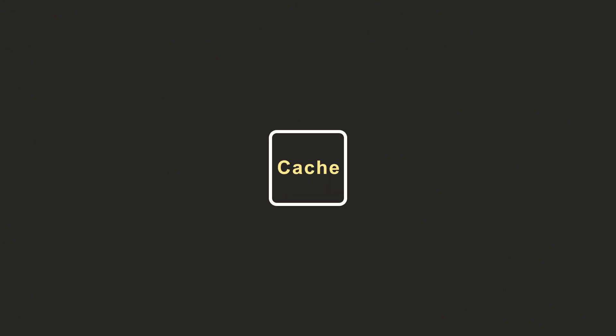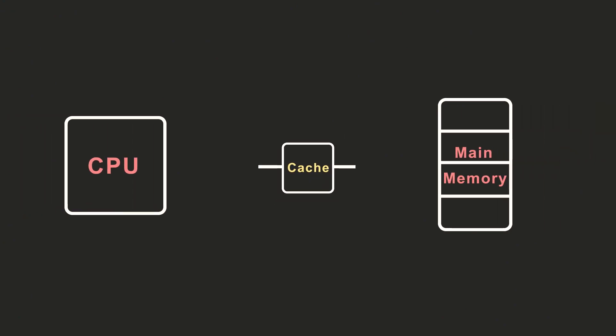Main memory is relatively slower compared to the processor. The processor is super fast, and to match its speed we need a high-speed storage device. Therefore, cache — a fast storage device — is introduced as a storage bridge between main memory and the processor.